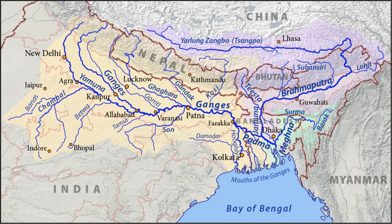The Ganges Basin is a part of the Ganges-Brahmaputra Basin draining 1,086,000 square kilometers in Tibet, Nepal, India and Bangladesh.